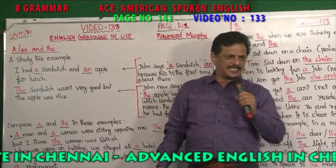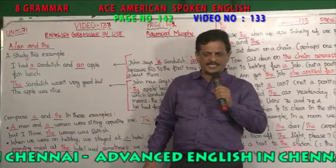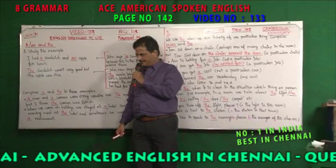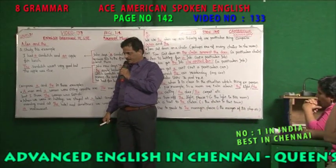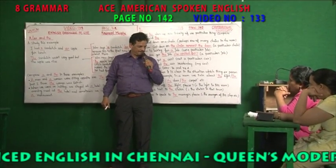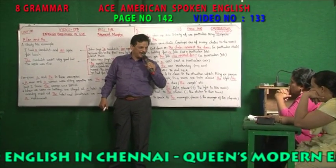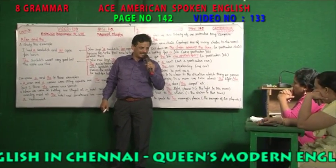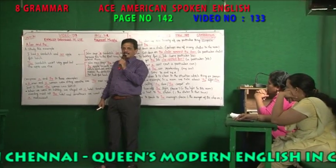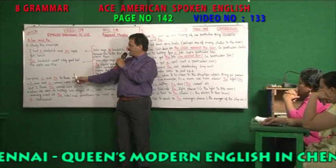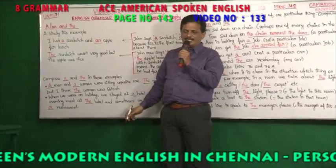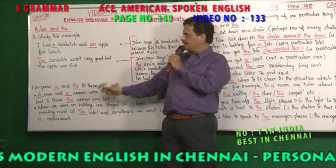Definite article, indefinite article. What is a definite article? What's an indefinite article? 'The' is a definite article. 'A' and 'AN' are indefinite articles. A, AN, and the — these are the articles.